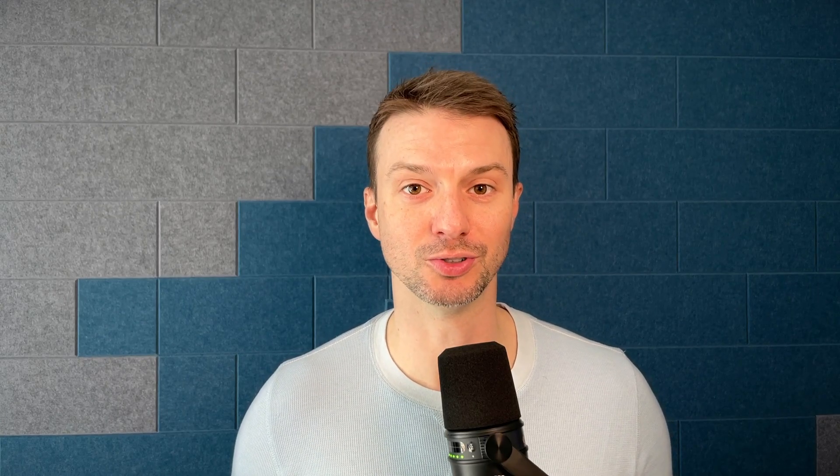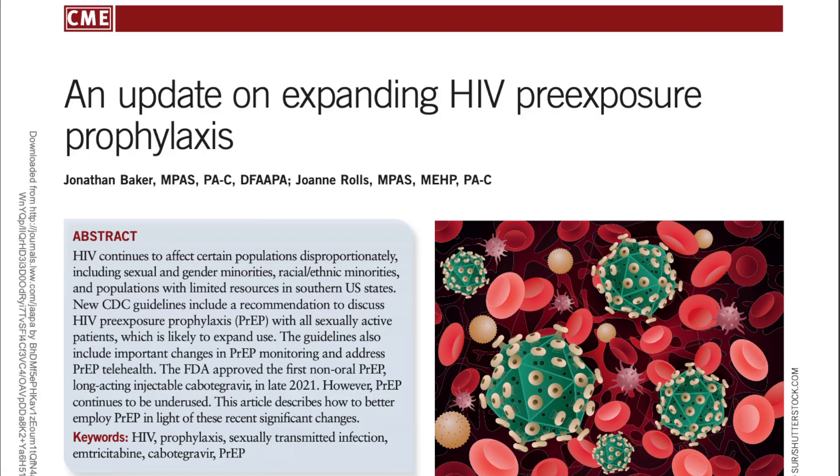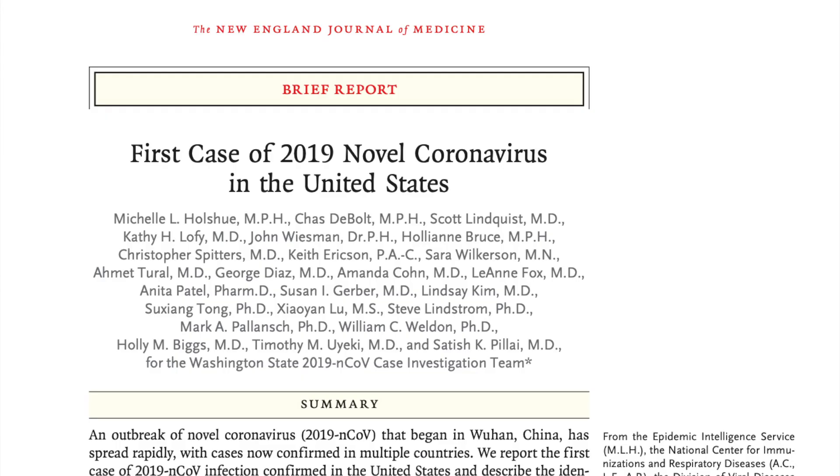The first place you should consider publishing your Medical Humanities articles are in general medical journals or specialty medical journals. These are general medical journals that typically publish clinical articles and are geared towards a clinical audience, so they often publish original research, clinical review articles, and case reports.